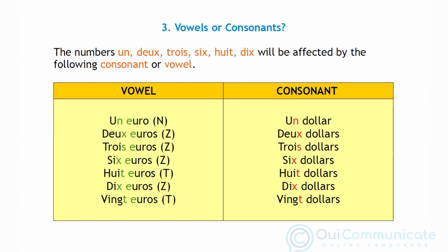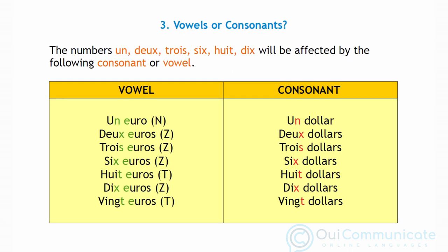Numbers will follow this same logic. To understand how it works, we must first ask ourselves if the following word starts with a vowel or a consonant. The numbers 1, 2, 3, 6, 8, and 10 will be affected by the following consonant or vowel. Starting with the column of vowels, we'll use the word 'euro', which starts with an 'e', as an example. Reading from top to bottom, this sounds as follows: un euro, deux euros, trois euros, six euros, huit euros, dix euros, vingt euros. You will have noticed that after the number 'un' we are now linking with the n, the numbers 8 and 20 have a t that we can clearly hear, while all the others now make a z sound.